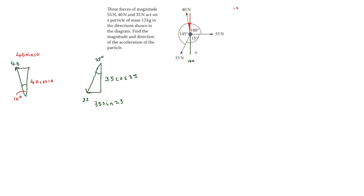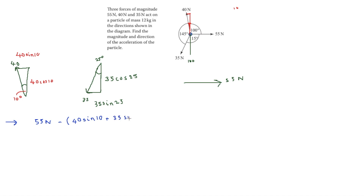The final force, 55 newtons, acts straight across horizontally. Looking at the horizontal direction: we have 55 newtons positive, minus 40 sin 10, minus 35 sin 25. That equals 33.26 newtons.